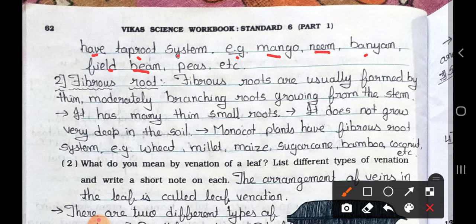Now see the number 2. It's a fibrous root. Fibrous roots are usually formed by thin, moderately branching roots growing from the stem. It has many thin, small roots. It does not grow very deep in the soil. Monocot plants have fibrous root system. Example, wheat, millet, maize, sugarcane, bamboo, coconut, etc.